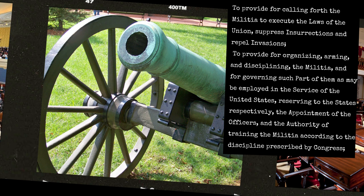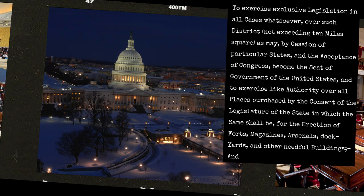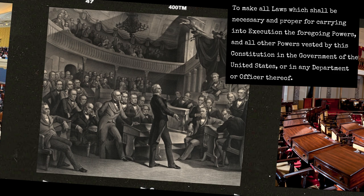To provide for organizing, arming, and disciplining the militia and for governing such part of them as may be employed in the service of the United States, reserving to the states respectively the appointment of the officers and authority of training the militia according to the discipline prescribed by Congress. To exercise exclusive legislation in all cases whatsoever over such district not exceeding 10 miles square as may by cession of particular states and the acceptance of Congress become the seat of government of the United States, and to exercise like authority over all places purchased by consent of the legislature of the state in which the same shall be for the erection of forts, magazines, arsenals, dockyards, and other needful buildings. And to make all laws which shall be necessary and proper for carrying into execution the foregoing powers and all other powers vested by this Constitution in the government of the United States or in any department or officer thereof.